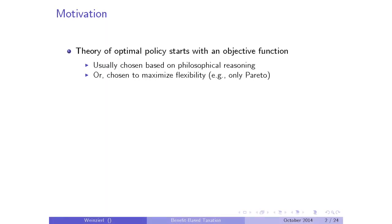This paper is one of a series coming from the same motivation: the theory of optimal policy starts with an objective function, and usually economists have chosen that based on naive philosophical reasoning. So we use utilitarianism, that works pretty well, or Rawlsianism—our version of Rawls—which is just Maximin.